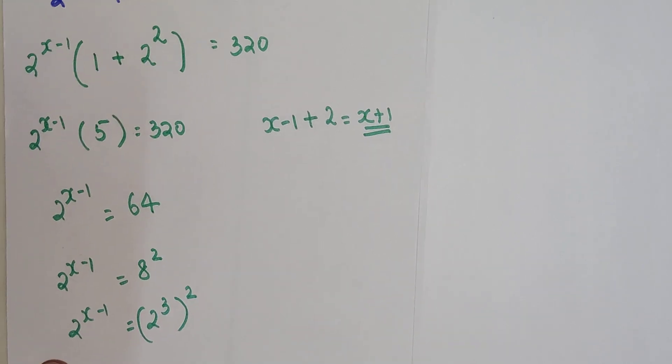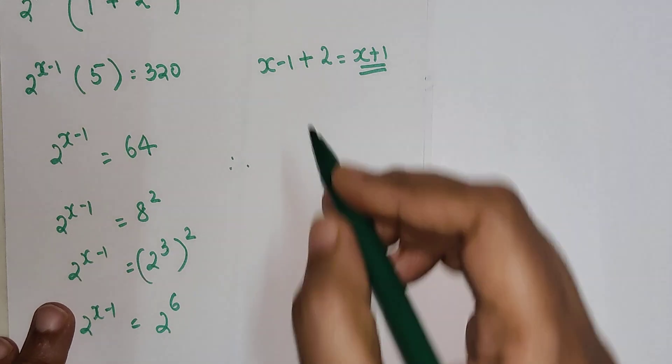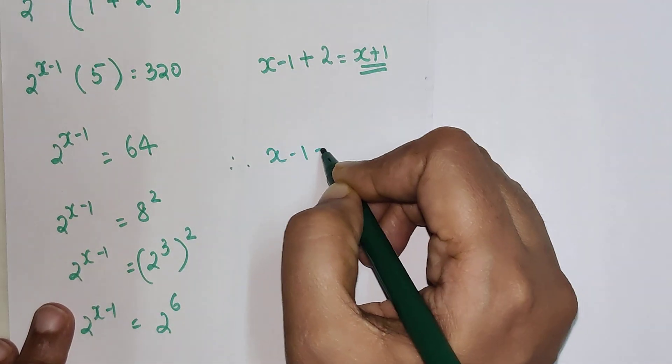And I know that 2 raised to x minus 1, and 8 is nothing but what, 2 cube, the whole raised to square. So again I can write 2 raised to x minus 1 is equal to 2 raised to 3 into 2, which is 6.